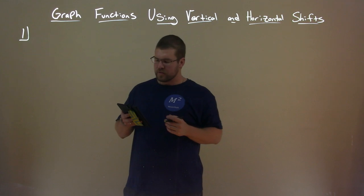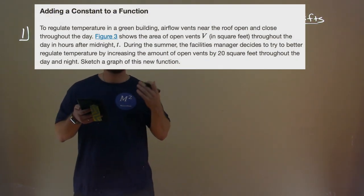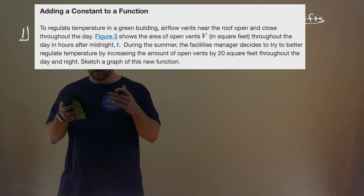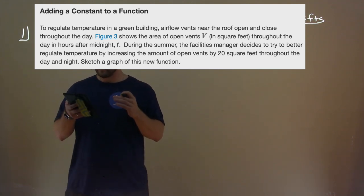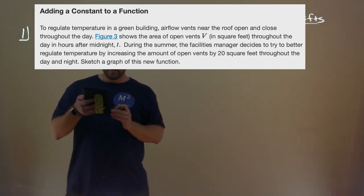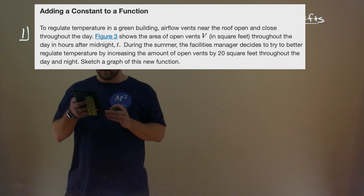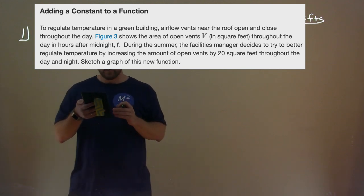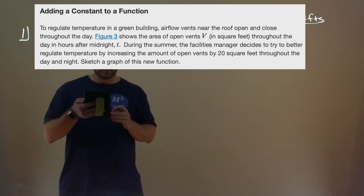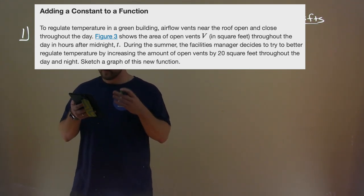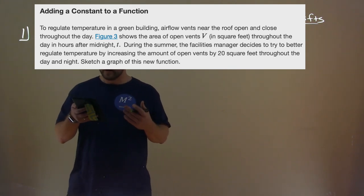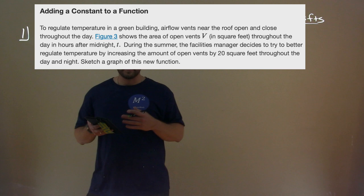So example one, we're adding a constant to a function. To regulate temperature in a green building, airflow vents near the roof open and close throughout the day. Our figure shows the area of open vents v in square feet throughout the day in hours after midnight t. During the summer, the facility's manager decides to try to better regulate temperature by increasing the amount of open vents by 20 square feet throughout the day and night. Sketch a graph of this new function.